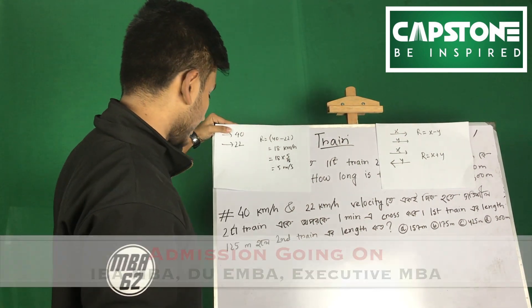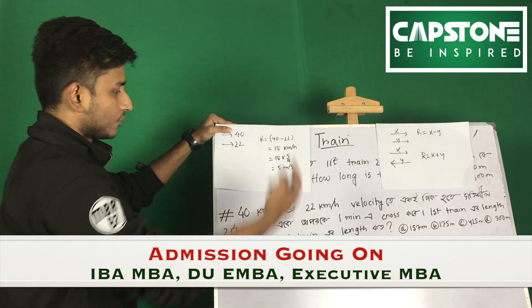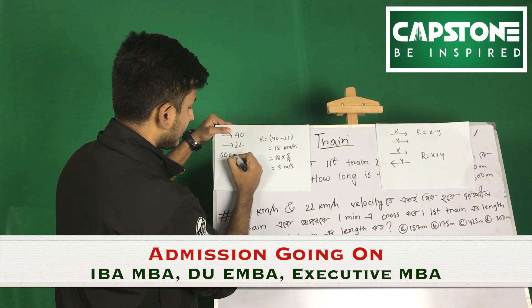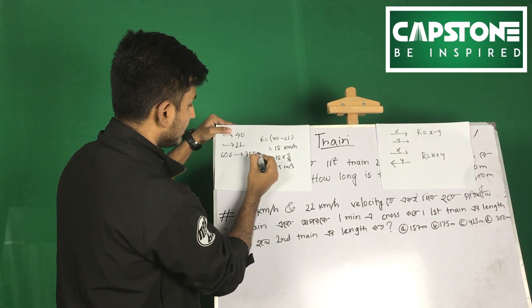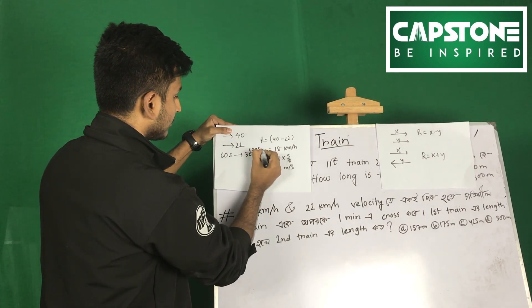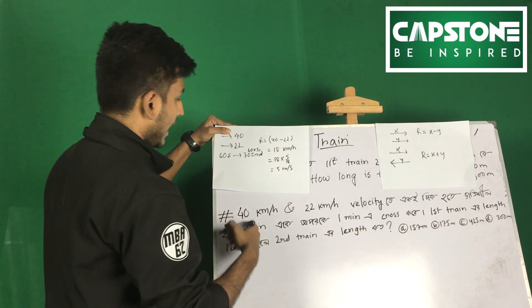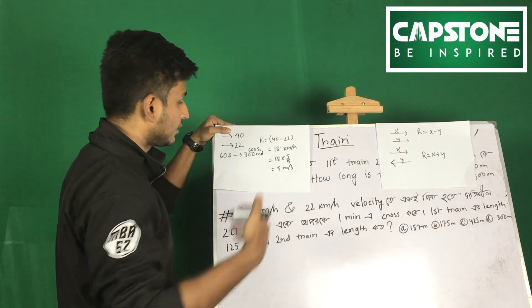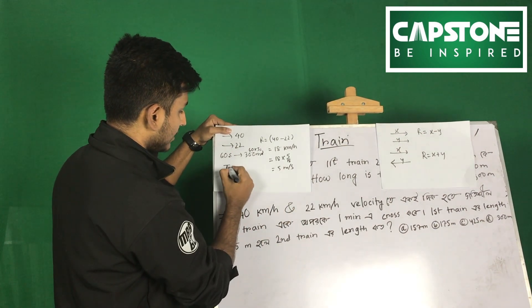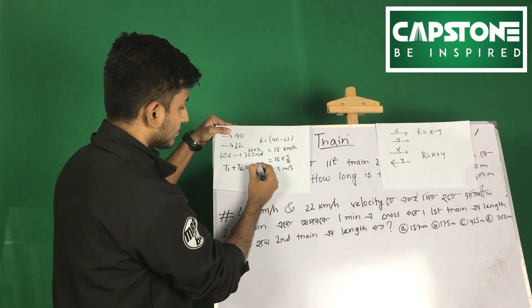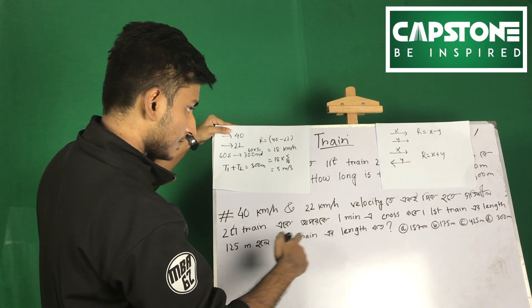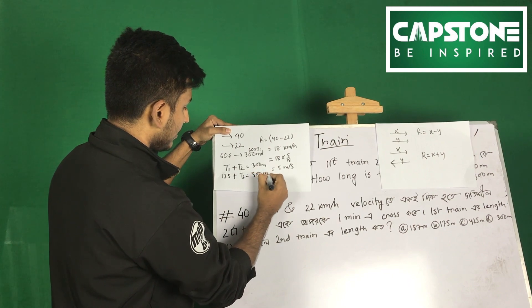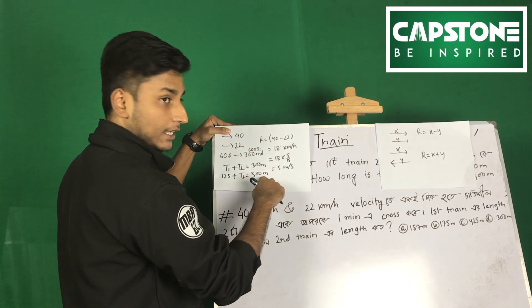So the speed is 5 meters per second. Since we are crossing in 60 seconds, the total distance covered is 5 times 60 equals 300 meters. The distance covered equals the first train length plus the second train length, totaling 300 meters. The first train length is 115 meters, and the second train length is 300 minus 115 equals 185 meters.